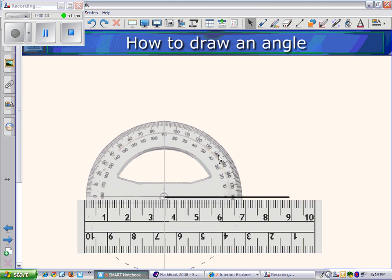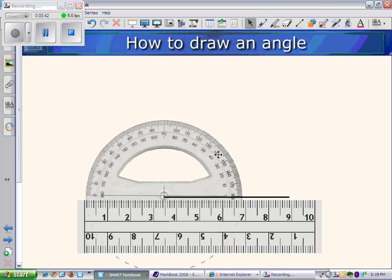Now we've matched the vertex to the end of the line. We have the line resting on the zero-degree marker of our protractor.